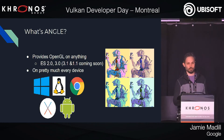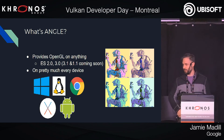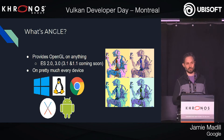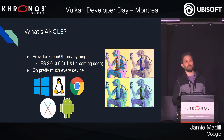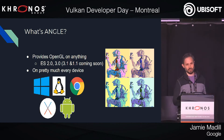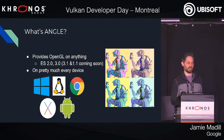ANGLE is a portable OpenGL implementation. It started back in about 2010 and was originally designed to help WebGL get started, because people were a little bit worried about the stability of OpenGL drivers on Windows. So ANGLE came along and said, we'll translate OpenGL into Direct3D. Since then, it's kind of grown and become a bit of a monster — it can run on almost any platform, and it can target Direct3D 9, Direct3D 11, OpenGL, and now we're doing Vulkan. Its design is to make OpenGL portable.